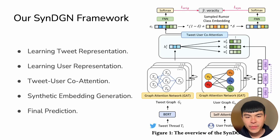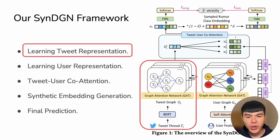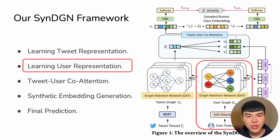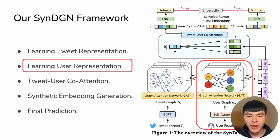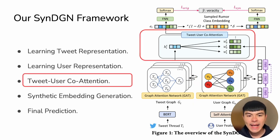Our proposed framework is called SynthDGN. The first step is to learn the tweet representation, which consists of a BERT model and a graph attention network. The second step is to learn the user representation, which we use the self-attention mechanism with the graph attention network to derive the user representation. Then, we fuse both representations from tweet and user using a co-attention mechanism.